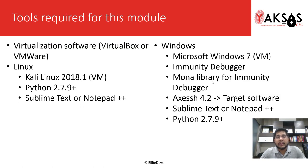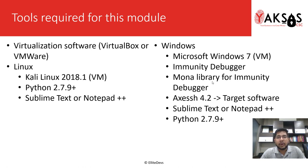These are the tools required for this module. We need a virtualization software — you can use either VirtualBox or VMware, whichever you are comfortable with. We need two virtual machines: one Linux machine and one Windows machine. For Linux I will be using Kali Linux 2018.1, and on that machine I will require Python 2.7.9 and a text editor — either Sublime Text or Notepad++.